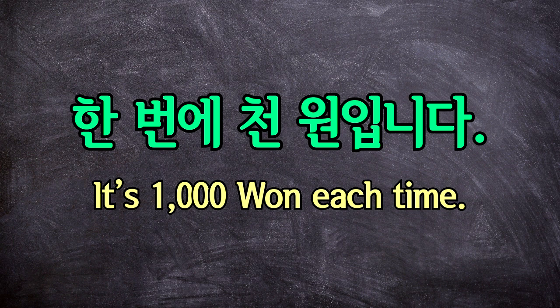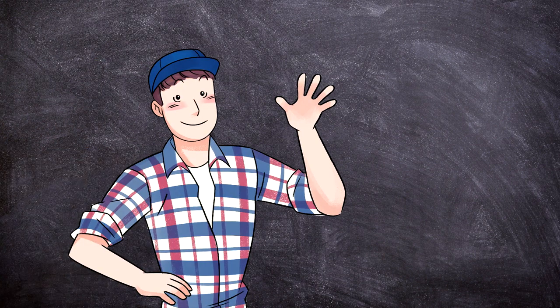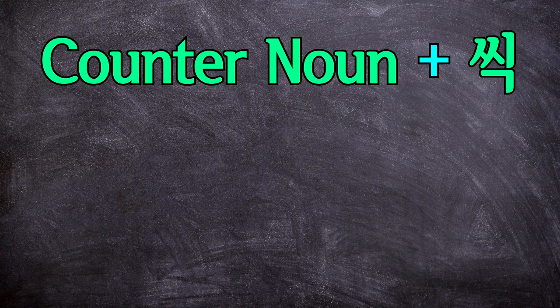And here's just one more example. 한 번에 천 원입니다. It's one thousand won each time, or literally, it's one thousand won for one time. That's it as far as how to use the particle 에 like this. But there's one more thing you should also know, which is often used together with this particle 에, and that is 씩.